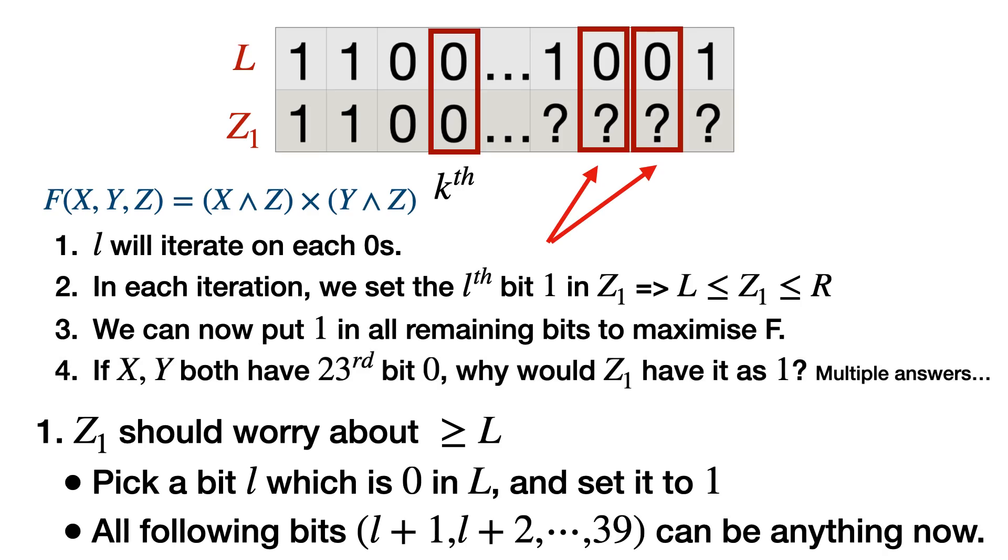The other thing to consider is, if let's say the 23rd bit is zero in both X and Y, do you think it makes sense for Z to have a one there? When you perform the AND, the 23rd bit in the resultant for both X and Y will stay zero. So it's not magnifying our answer. We should keep that bit as zero in Z as well, because in case of multiple answers we have to pick the smallest Z value.